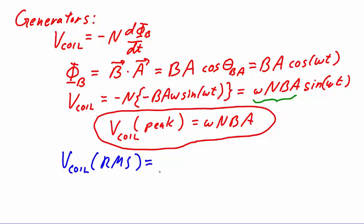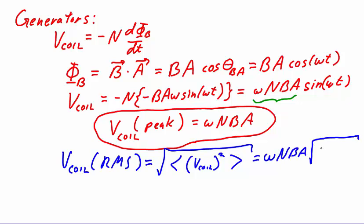Root mean square is very literal and then it means we take the square root of the average or mean of some quantity squared. In this case the quantity that we'll be taking the average of is the voltage on the coil. The constants omega n b and a will be squared and then square rooted because they come out of the average.